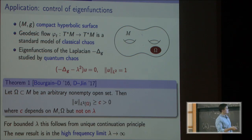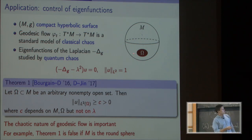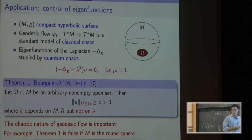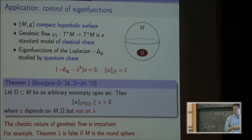This statement looks simple, but you do need some structure of the surface. What we use is the structure of the geodesic flow, and this statement will not be true for any given surface. For instance, if M were a sphere and omega is a small ball, you can find a sequence of eigenfunctions which localize to the equator, and their mass on omega would be exponentially small in frequency. So to prove this statement, we need to invoke global properties of the geodesic flow on the manifold.